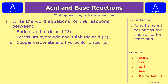We have three neutralisation reactions to look at. Question one: what happens when you react barium and nitric acid? Number two: potassium hydroxide and sulfuric acid. And number three: copper carbonate and hydrochloric acid. Have a go, write the answers down, and we'll see how you've done in a second.